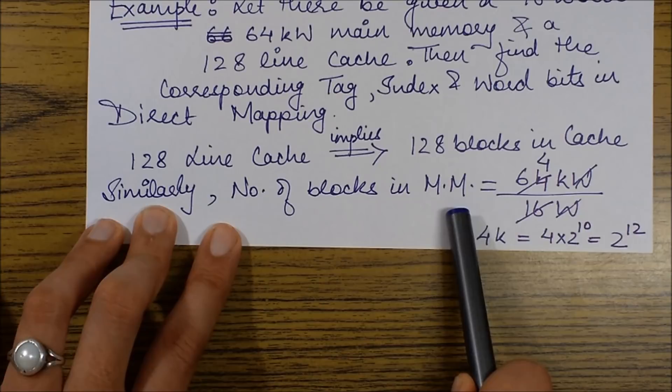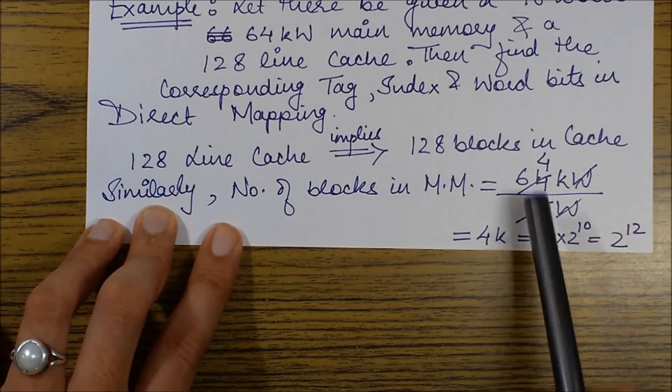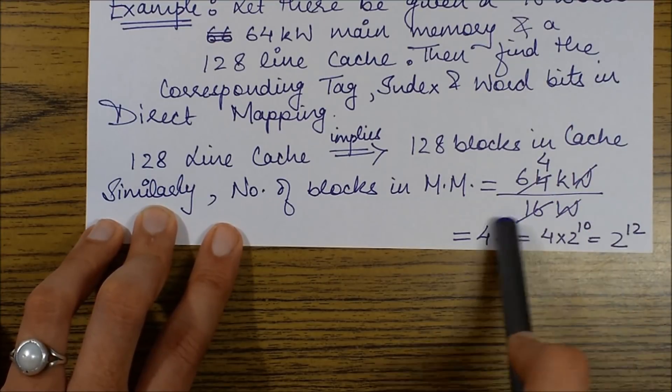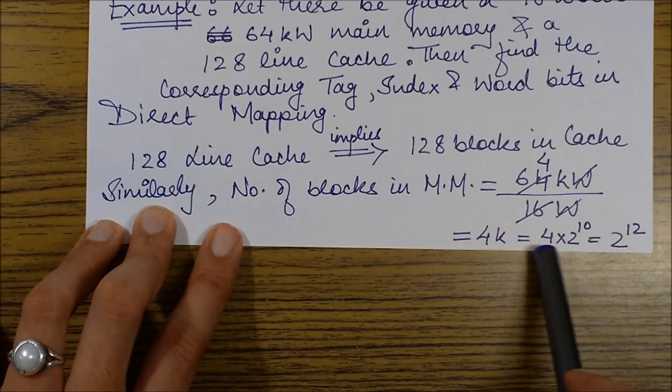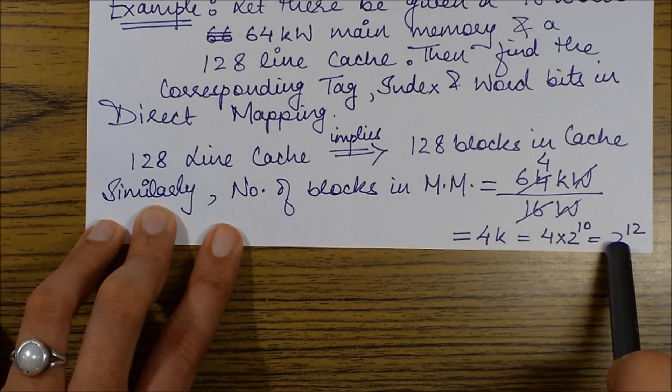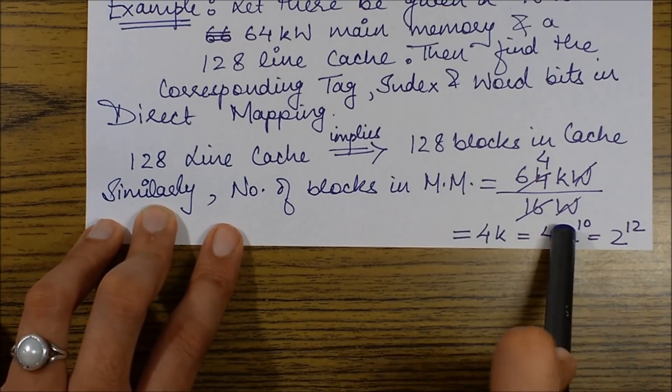Number of blocks in main memory: since we have the size of one block, it is 64 kilowords upon 16 words. This equals 4 kilo, which is equal to 2 × 2¹², so number of blocks in main memory are 2¹².